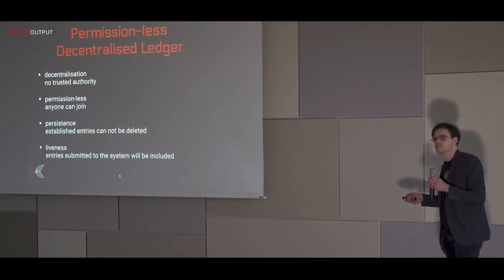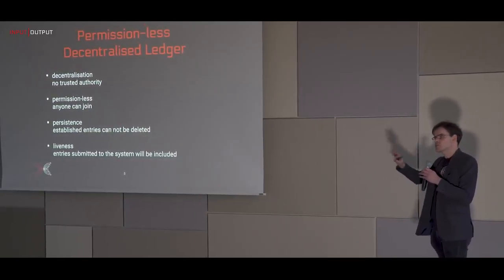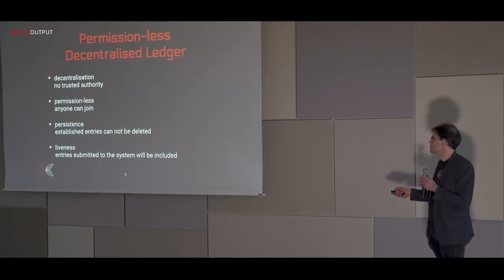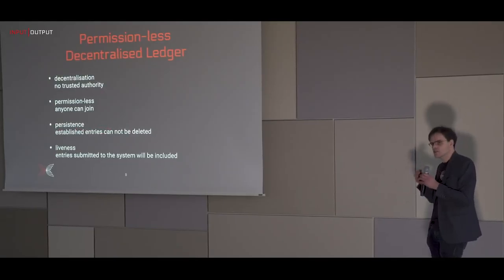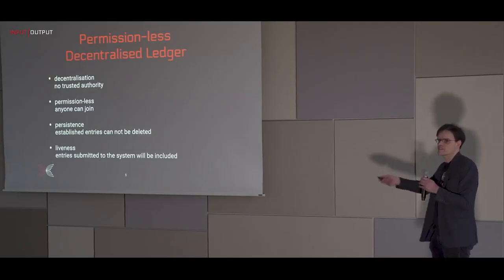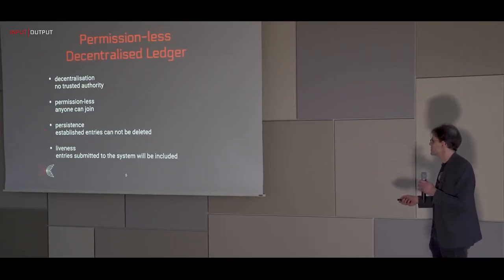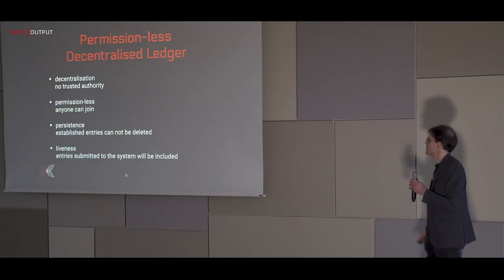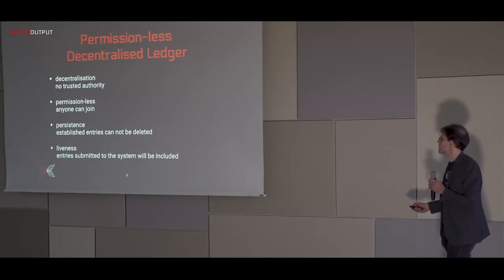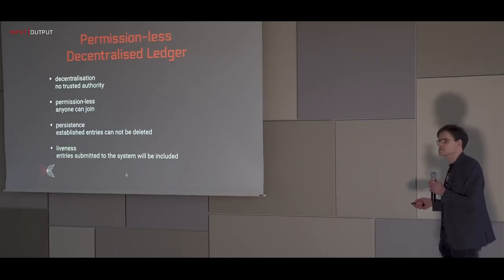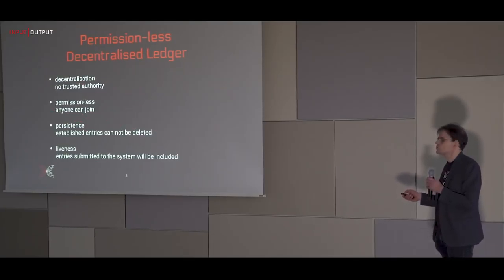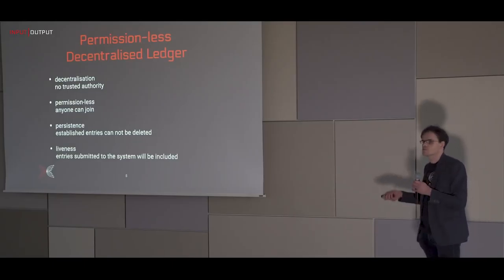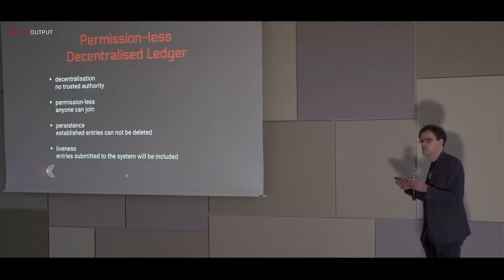For a currency you need a stable ledger, and you want two things: persistence — so transactions entered cannot vanish later — and liveness, meaning when you submit a transaction it ends up in the ledger after some time. These requirements are not easy to fulfill simultaneously, because you need something very stable that people can trust, but at the same time you don't want anybody to be the single source of that trust.